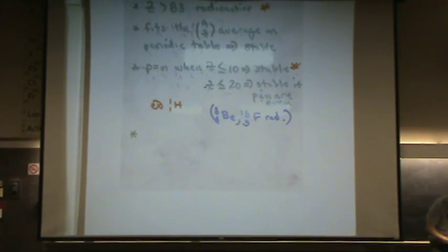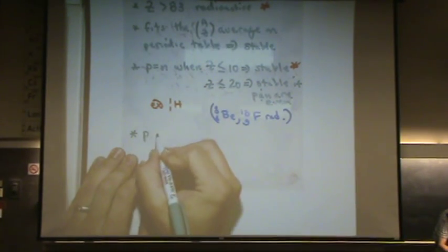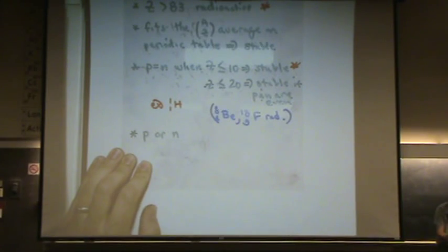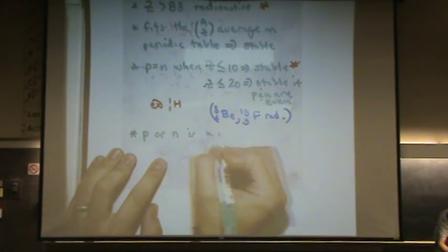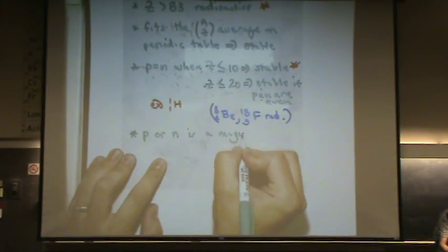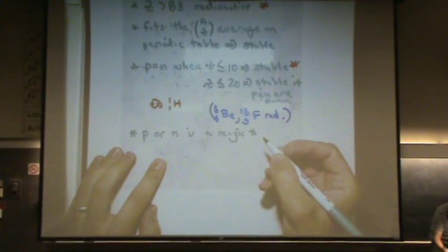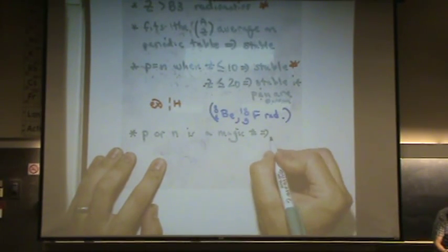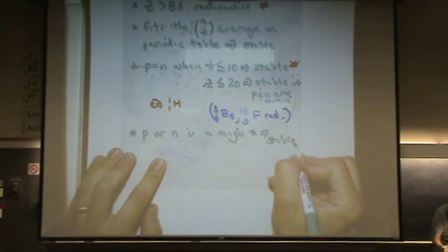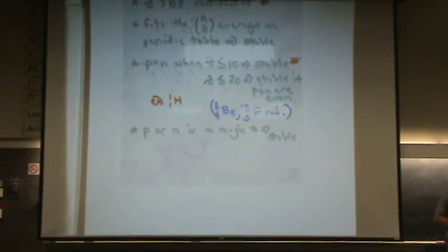Next one goes like this, if P or N, and you're going to love this, is a magic number, then it's stable. So if it's a magic number, you didn't think there was magic in chemistry, there is, okay?